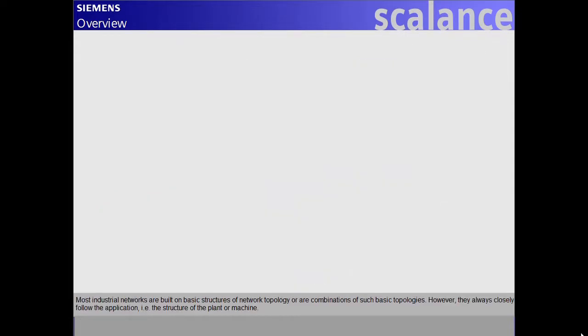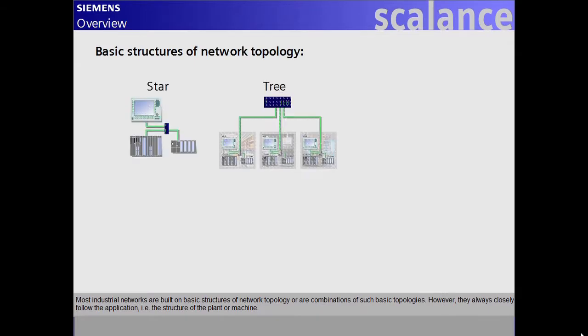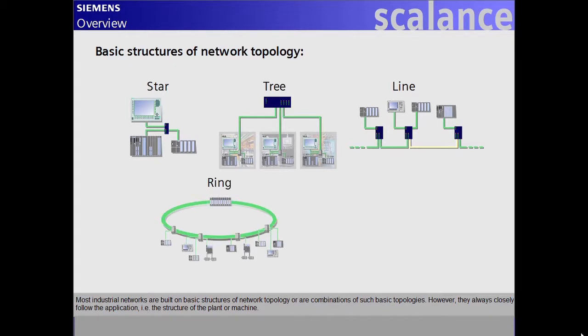Most industrial networks are built on basic structures of network topology, or are combinations of such basic topologies. However, they always closely follow the application, i.e. the structure of the plant or machine.